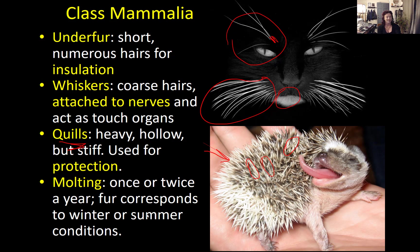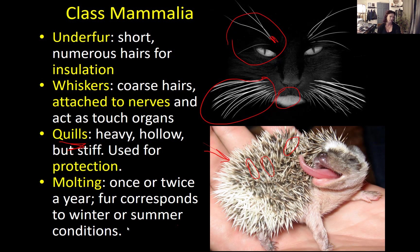Molting in mammals is similar to birds — it happens once or twice a year, fur is molted a little at a time only when replacement fur is ready to grow in. The kind of fur that grows depends on the season: a thick winter coat or a thinner summer coat, depending on whether the animal needs to conserve a lot of heat or be able to get rid of it.